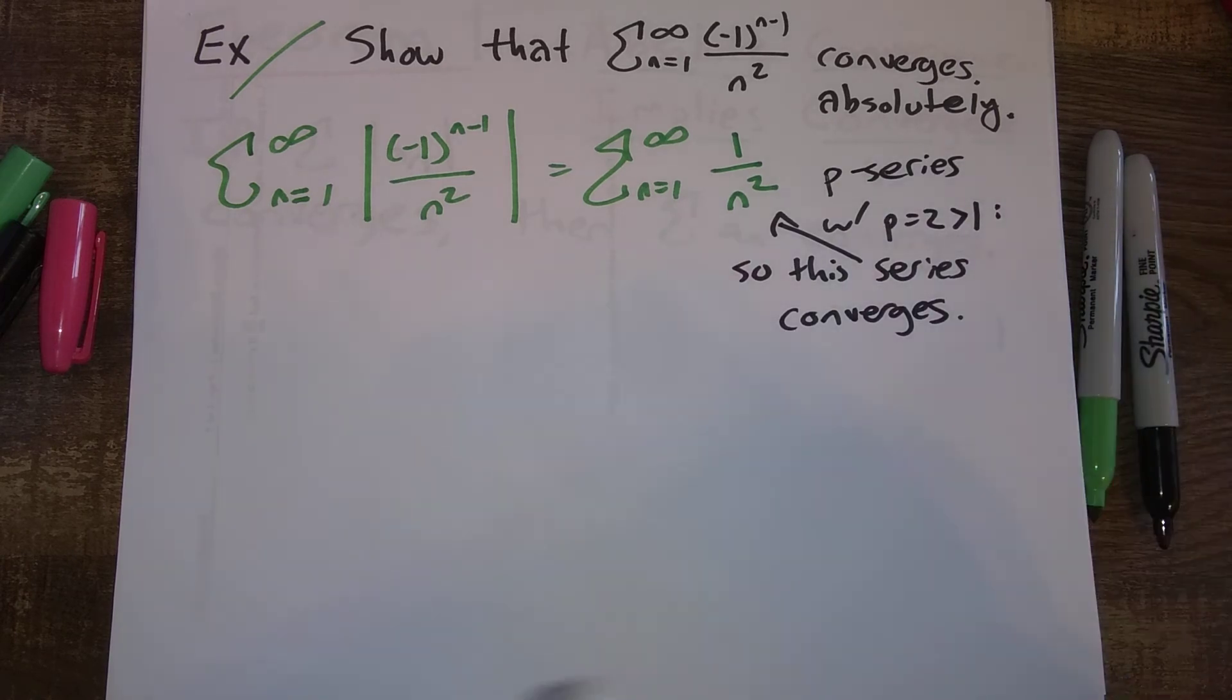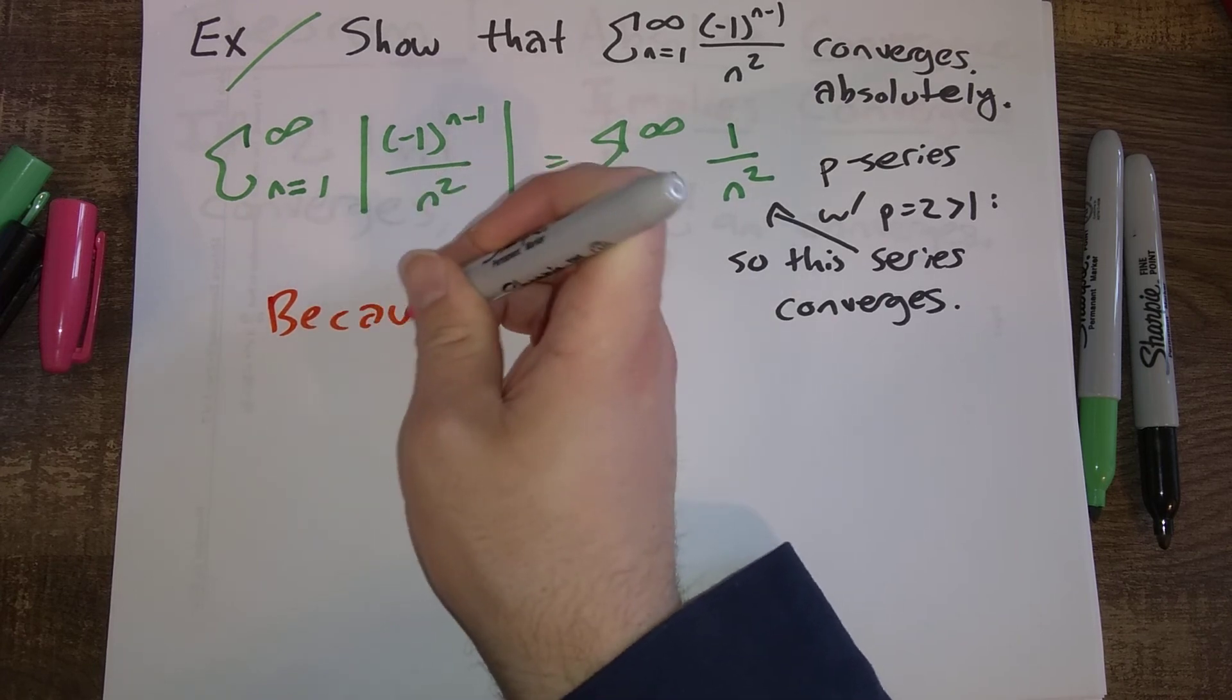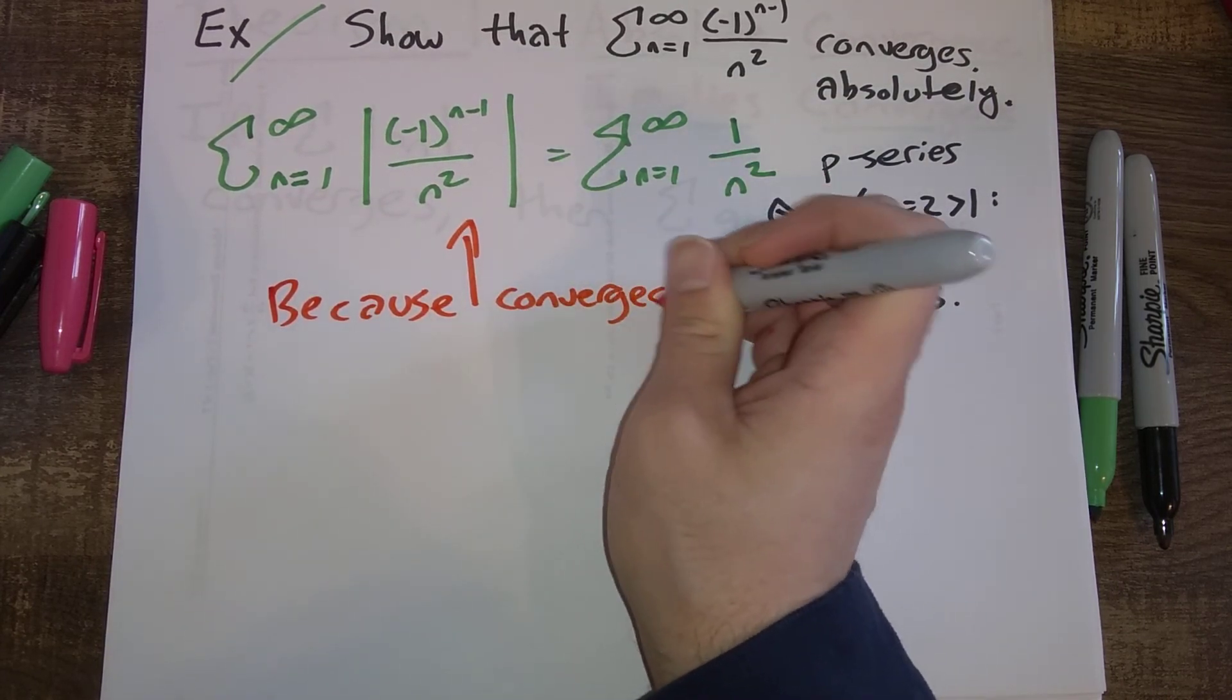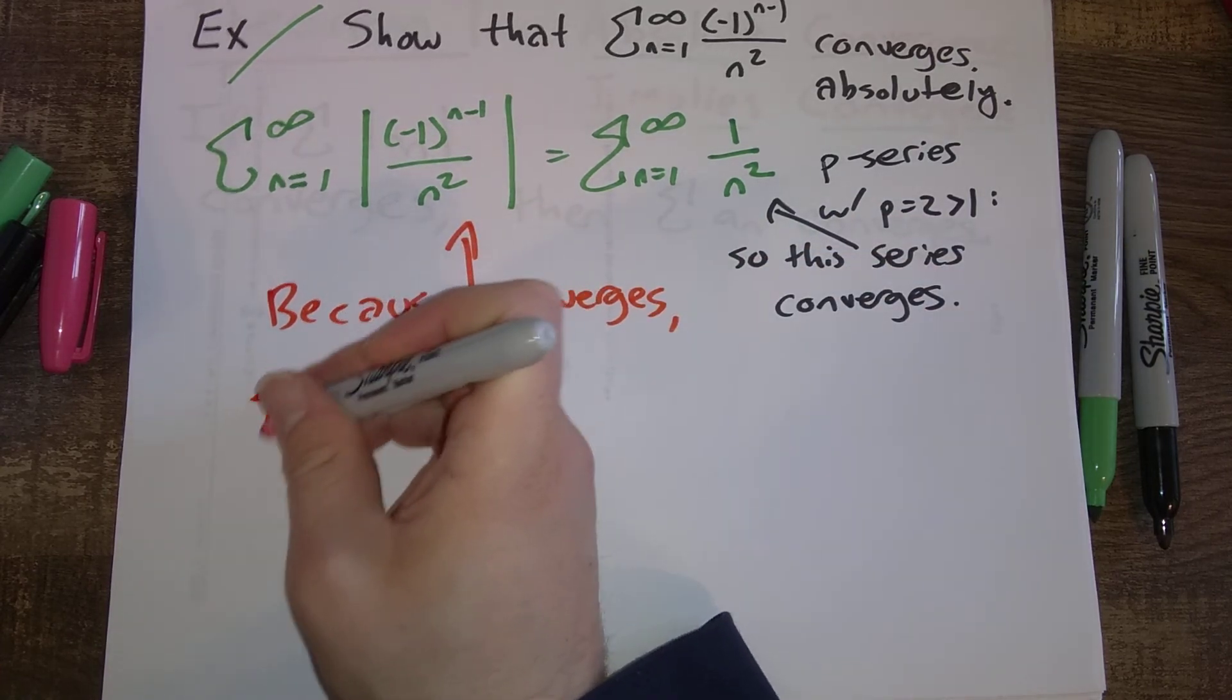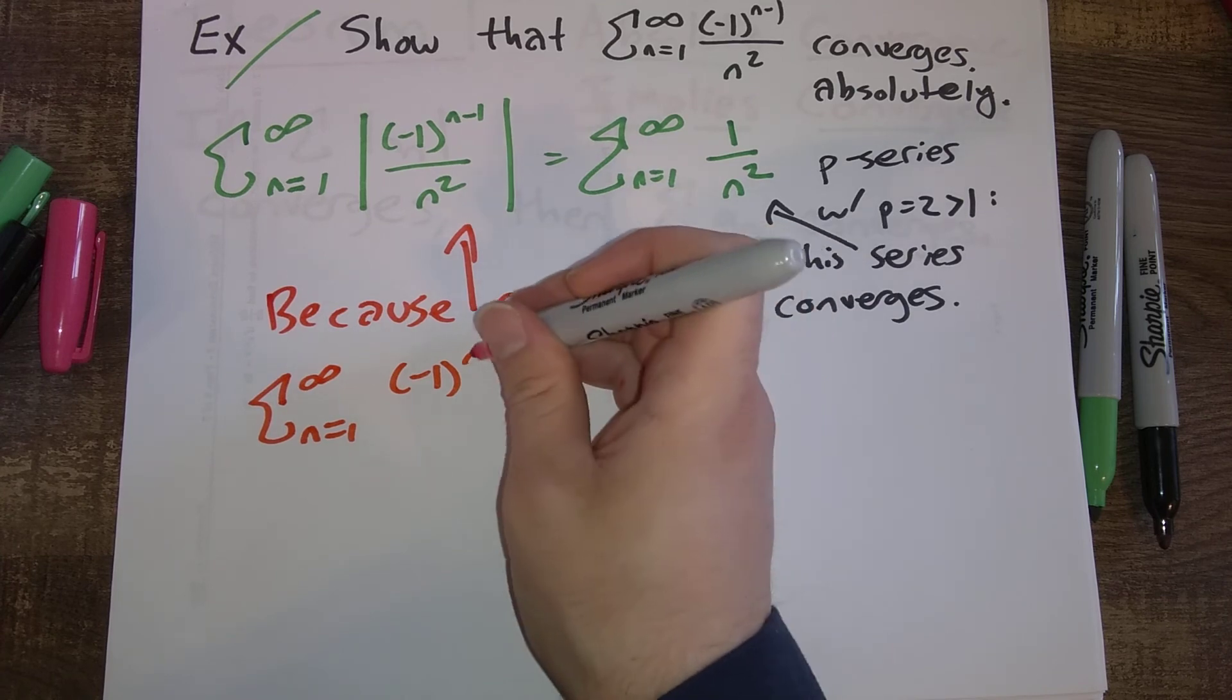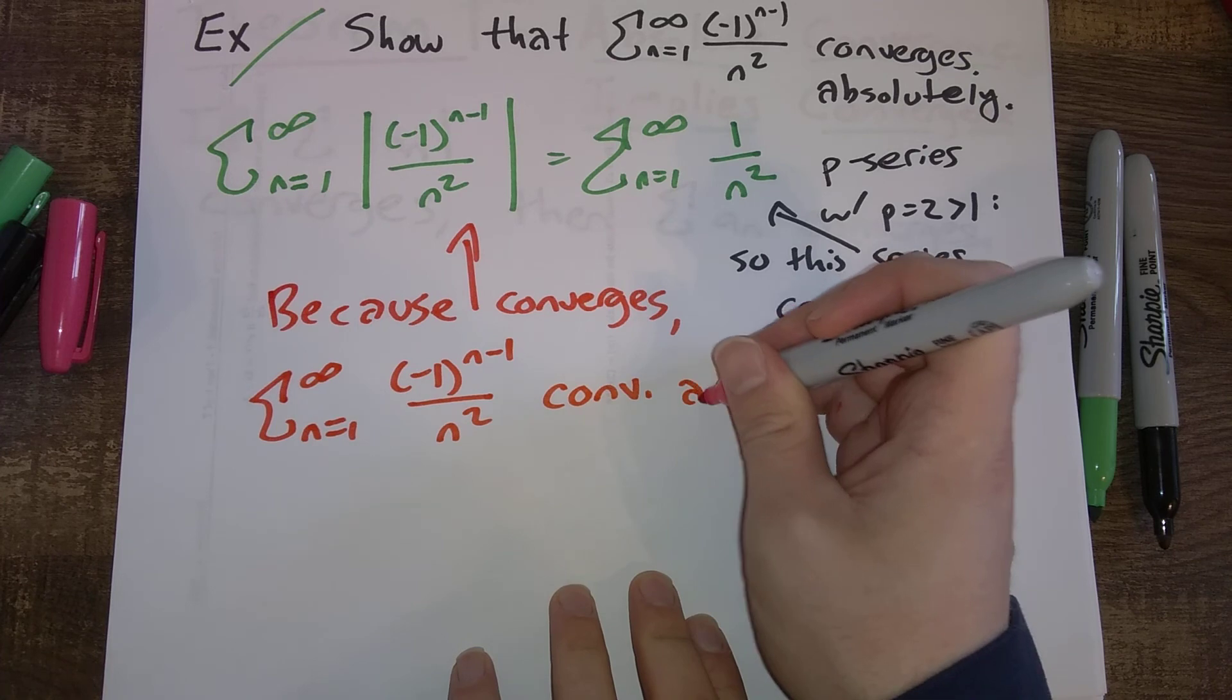Okay, so we conclude here that because this series converges, we say that the sum from n equals one to infinity, the original series, (-1)^(n-1) divided by n squared, this converges absolutely.